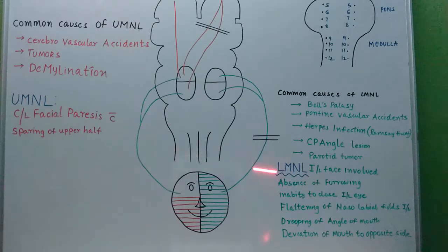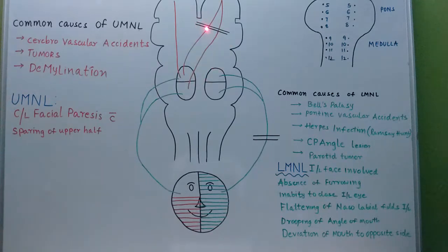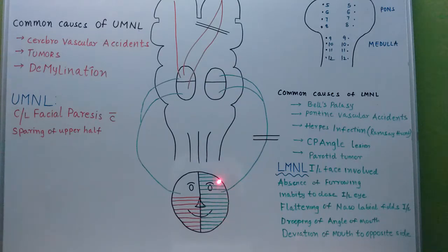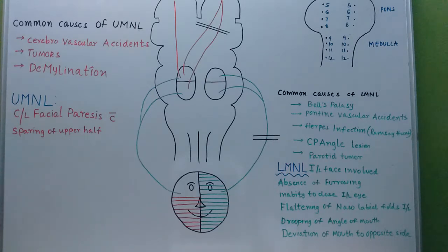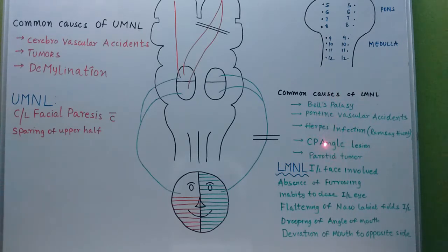To summarize the differences: in upper motor neuron lesions, there is contralateral involvement of the face — only the lower half is involved, with the upper half spared due to bicortical representation. In lower motor neuron lesions, the ipsilateral face is involved — both upper and lower halves — with absence of frowning, inability to close the eyes, flattening of nasolabial folds, drooping of the angle of mouth, and deviation of the mouth to the opposite side. Common UMN causes are cerebrovascular accidents, tumours, and demyelination; common LMN causes are Bell's palsy, pontine vascular accidents, herpes infection, cerebellopontine angle lesions, and parotid tumour.